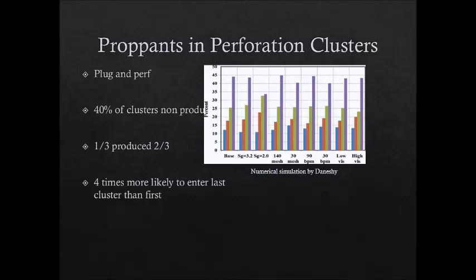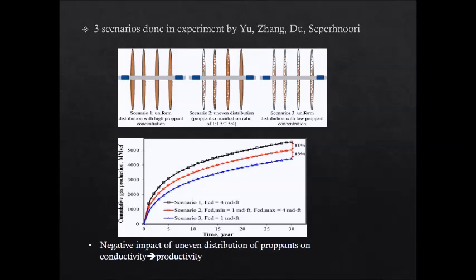In each fracturing stage, proppants are four times more likely to enter the last perforation cluster than the first, as you can see in the graph to the right. The figure above shows three different scenarios: the first is high uniform distribution and high concentration of proppants — optimal field conditions; the second is non-uniform distribution — realistic field conditions; the third is low conductivity and low concentration of proppants — very unwanted conditions. The graph below shows production from each scenario over a 30-year span, illustrating the negative effects of non-uniform distribution on well productivity.